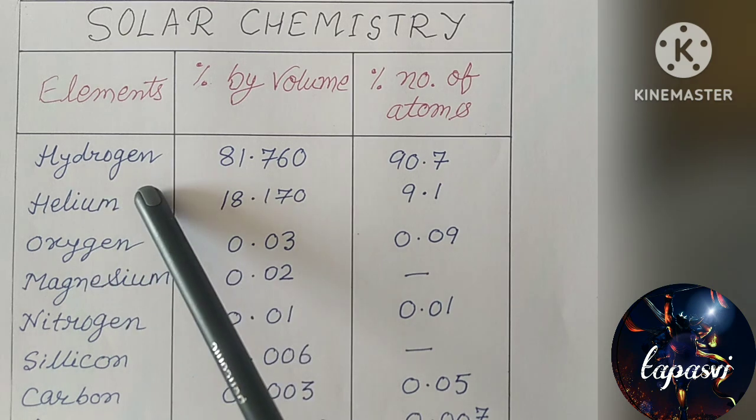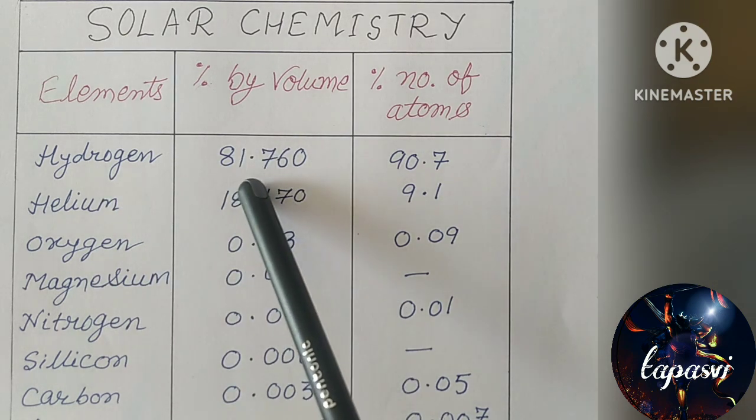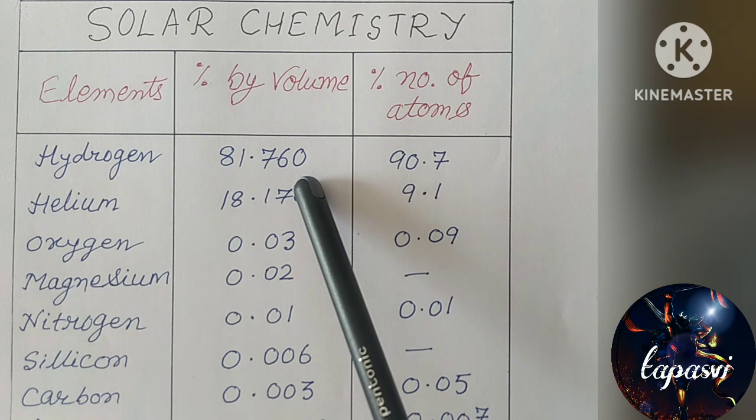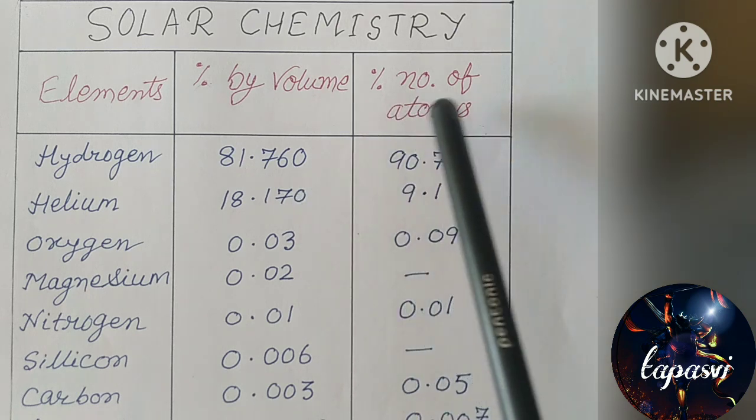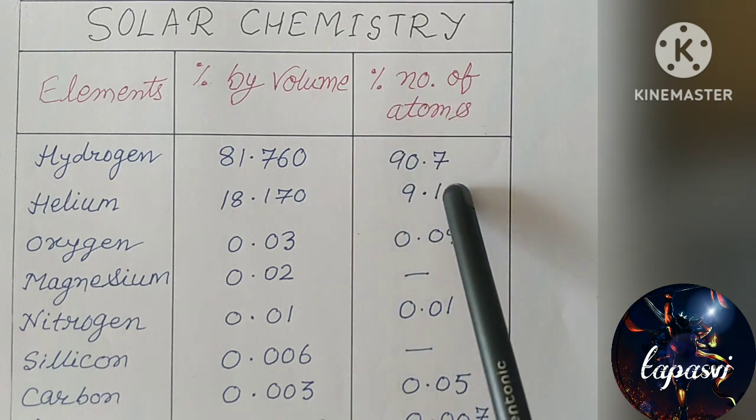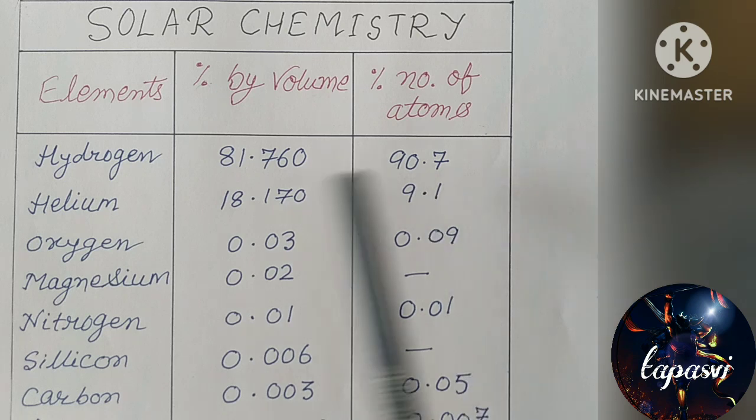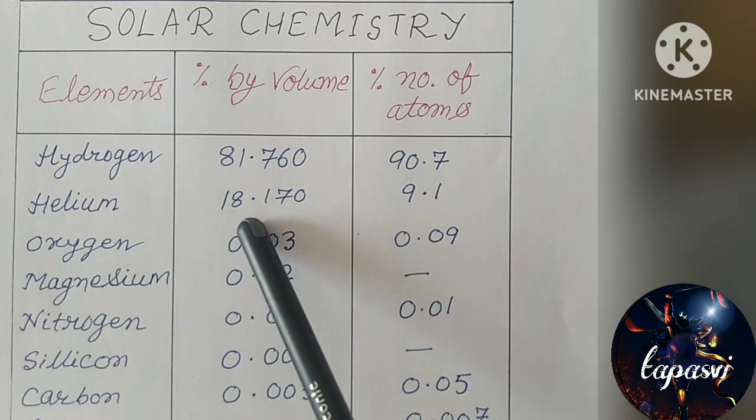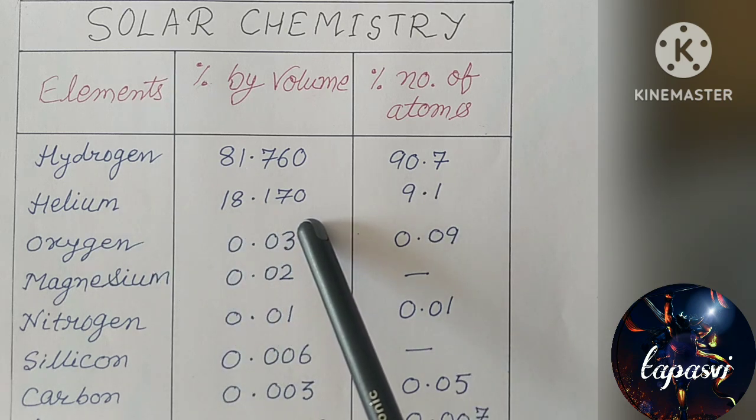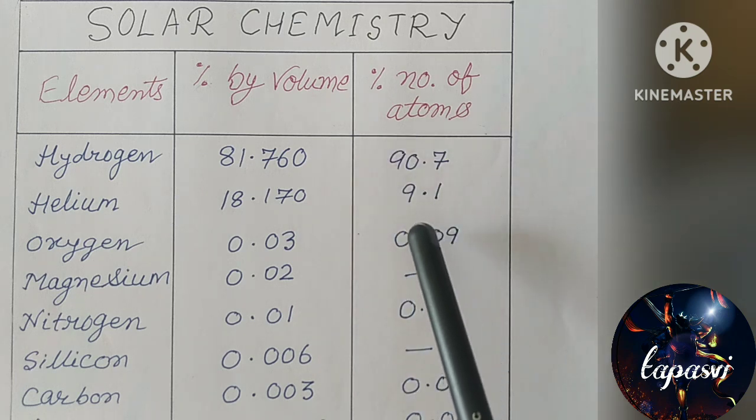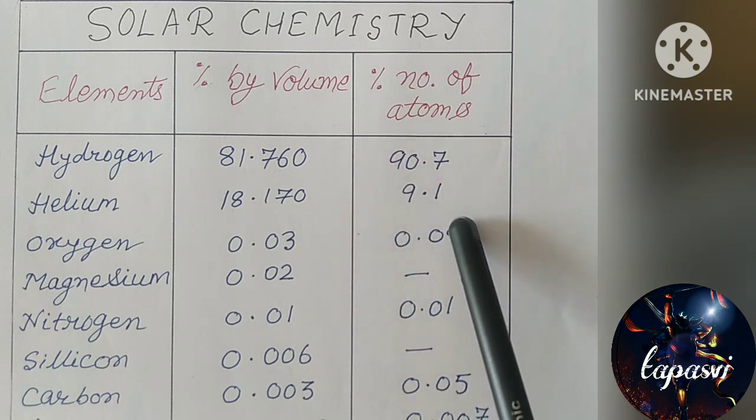Hydrogen: percent by volume is 81.760, while percent number of atoms is 90.7. Helium: 18.170 percent by volume, while percent number of atoms is 9.1.